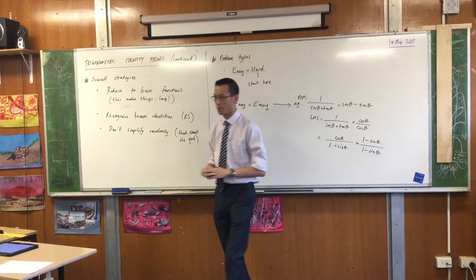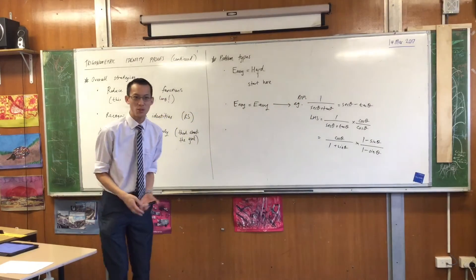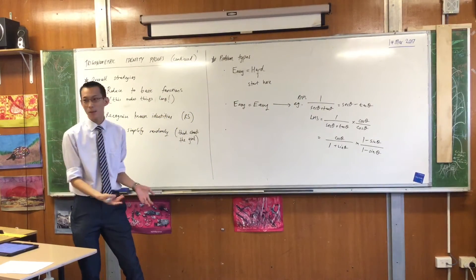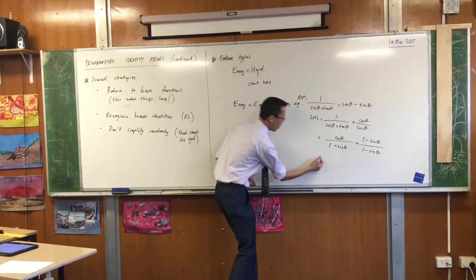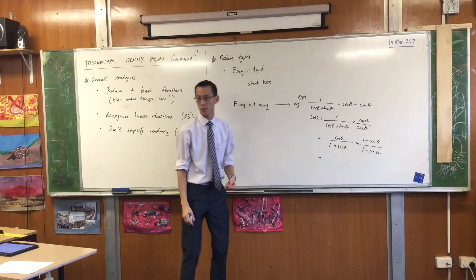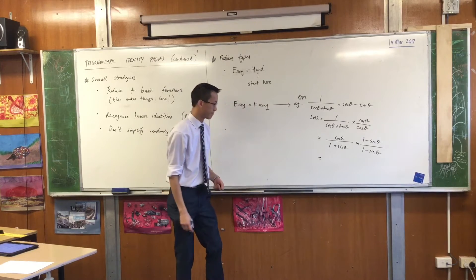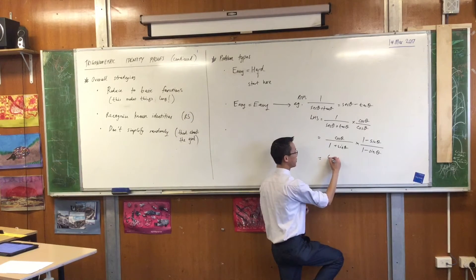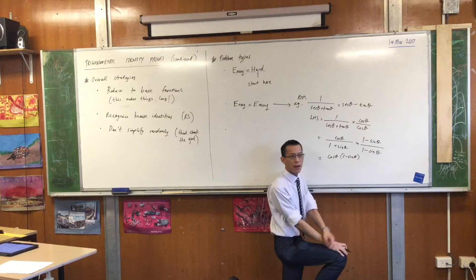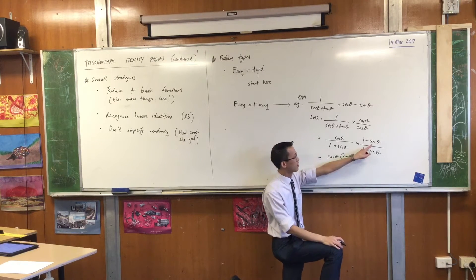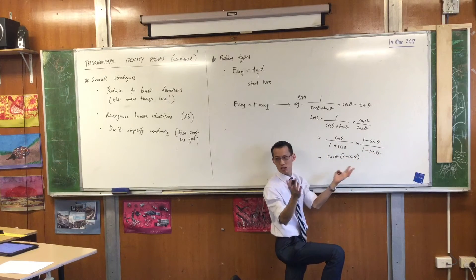Now, the question many of you will be begging is, how on earth did you think to do that? Where does that come from? I'll explain that in a second. Let's just see what happens. On the numerator, what do you get? Cos theta. And I'm actually just going to leave it factorized. You don't really gain very much by multiplying through, because it's not like these two simplify with each other. You just get a mess.